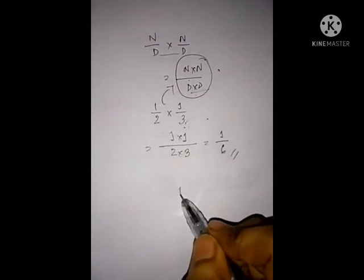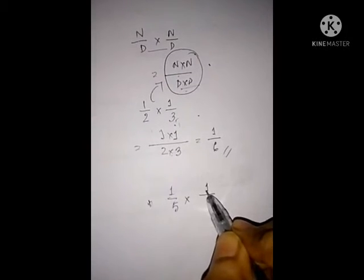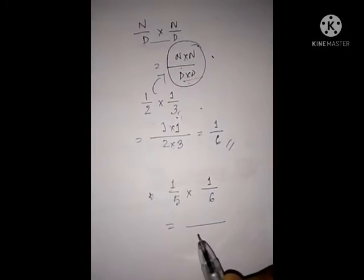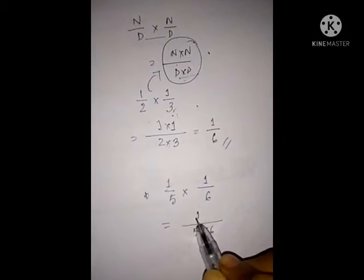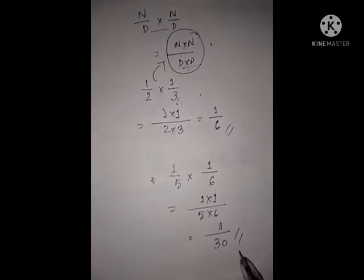Okay, see another example. 1 by 5 into 1 by 6. 5 into 6, 1 into 1. So the answer will be 1 by 30. Okay.